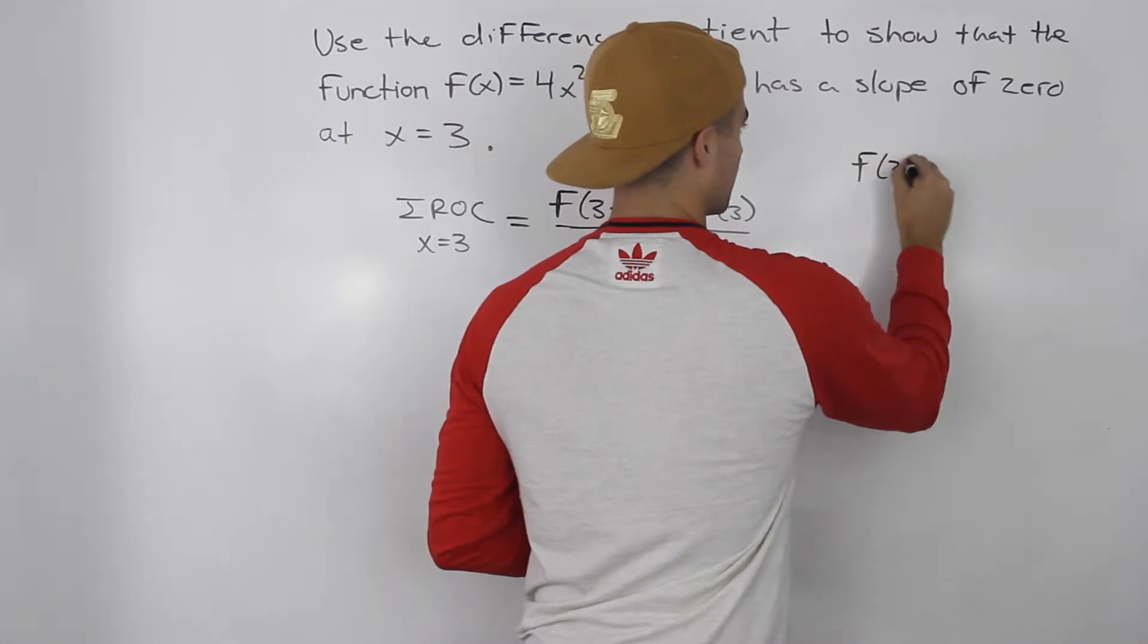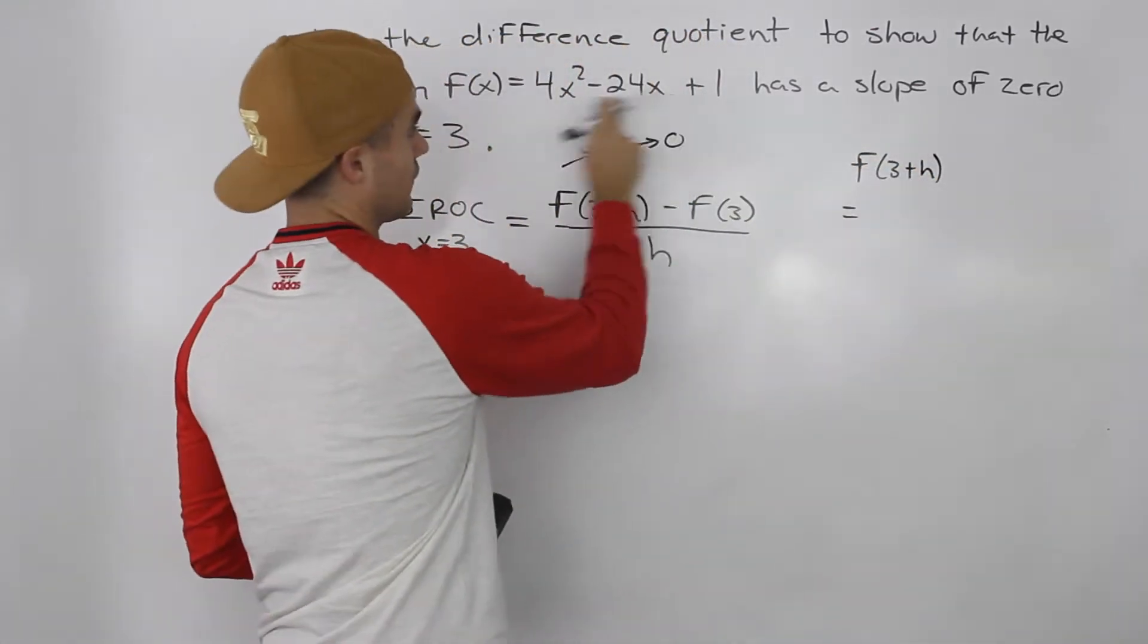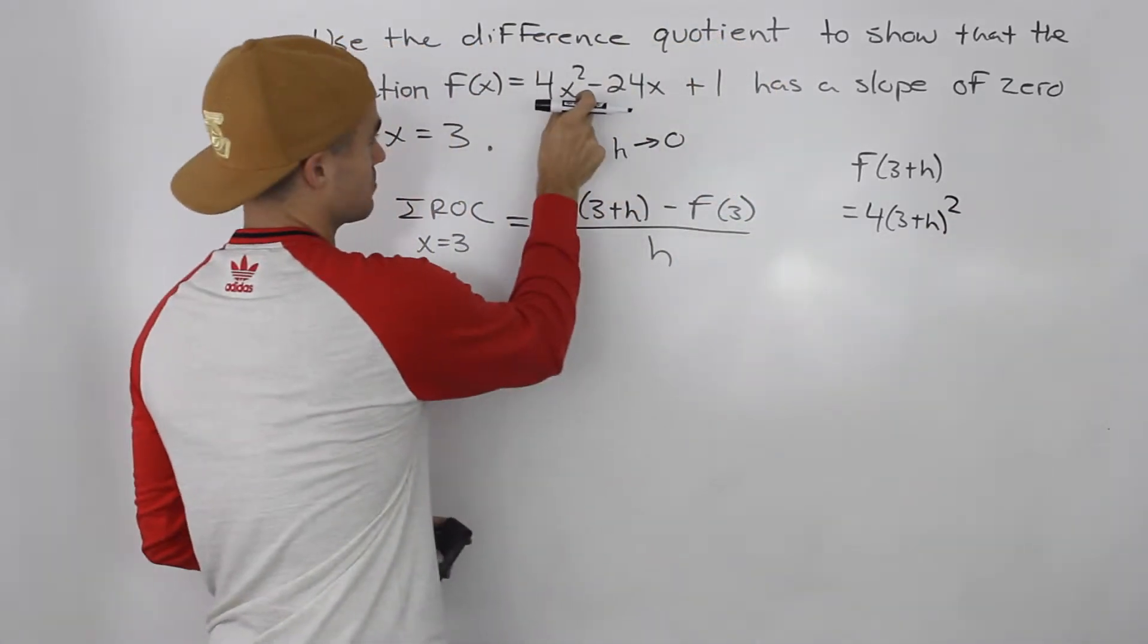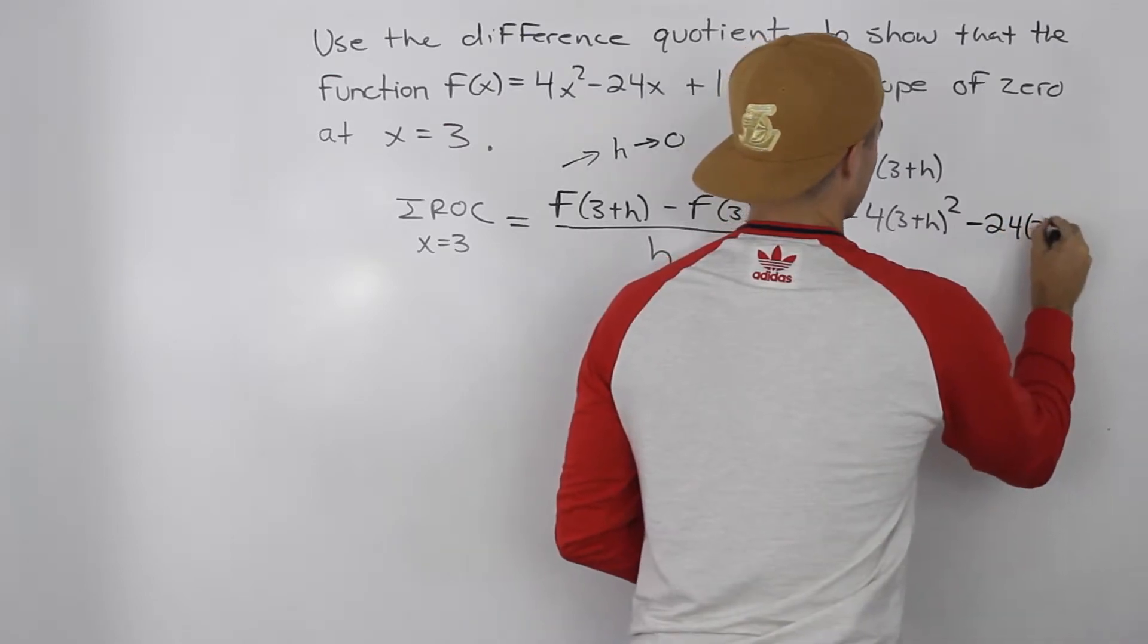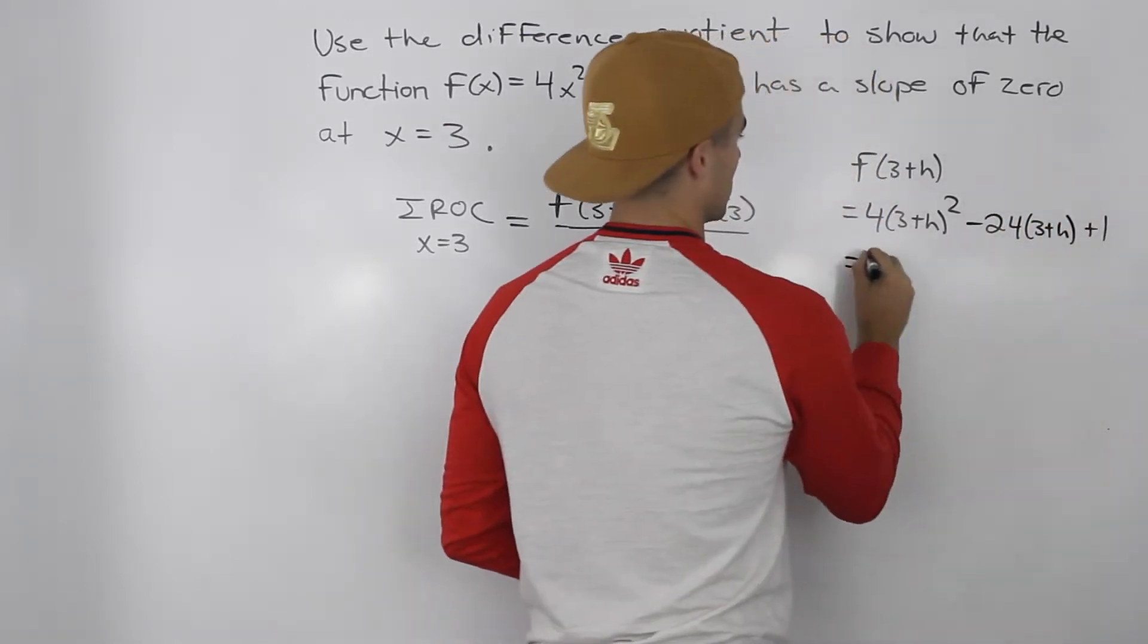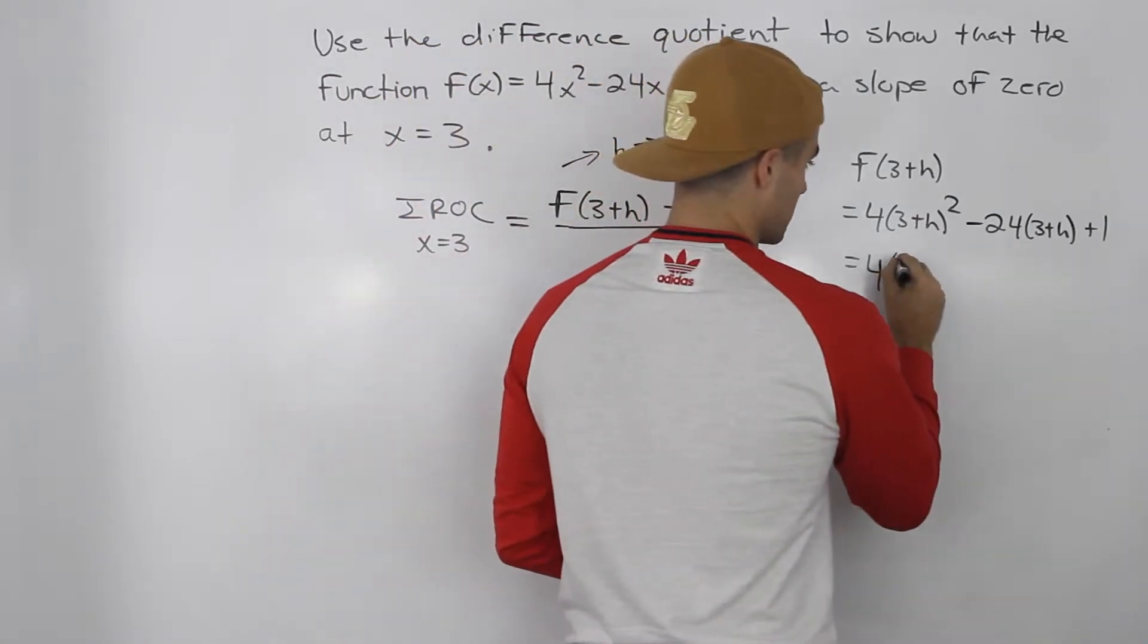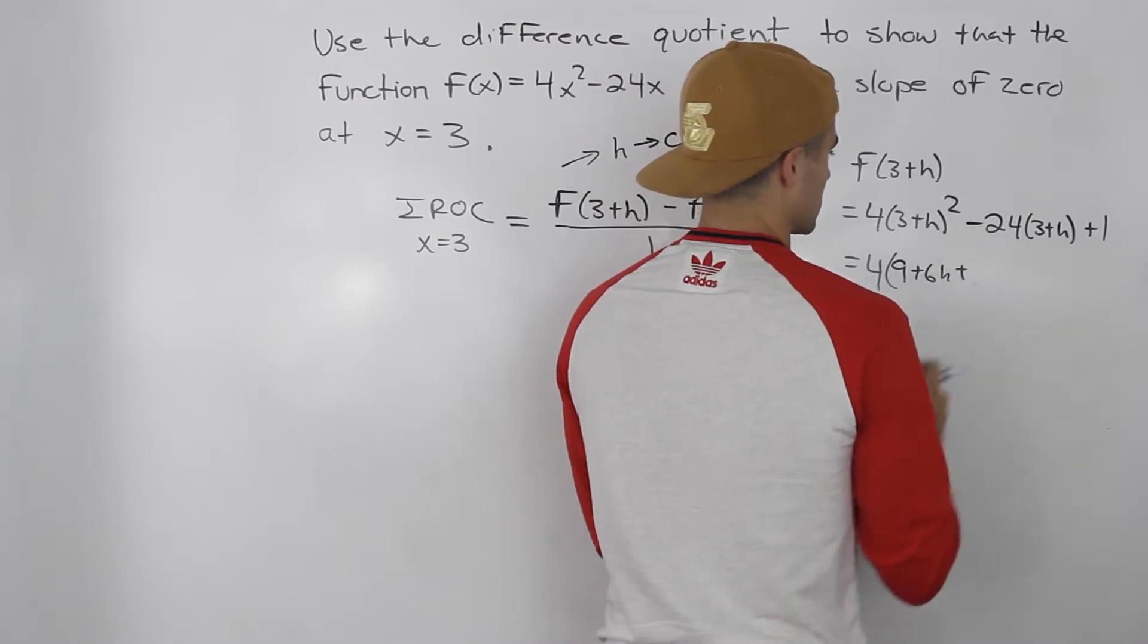f(3 + h) is going to be what? We have to take 3 + h and plug it in for all the x values here. So we'd have 4(3 + h)² - 24(3 + h) + 1. So 3 + h squared, remember you have to FOIL that, 3 + h times 3 + h, that would be 9 + 6h + h².